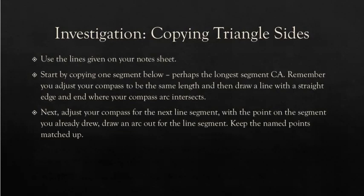Next, adjust your compass for the next line segment. Maybe you want to use BC next. With the point on the segment you already drew, draw an arc out for this line segment. Don't draw the line segment just yet. We don't know exactly where the angles should be. But keep the name points lined up. So if you've drawn CA and you're drawing BC, you're going to want to line up the C, point C, and so your arc will be out where B is going to be somewhere.